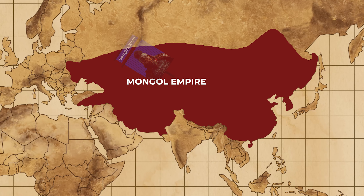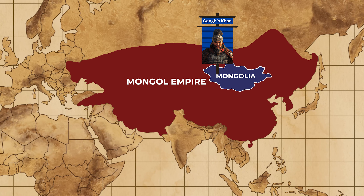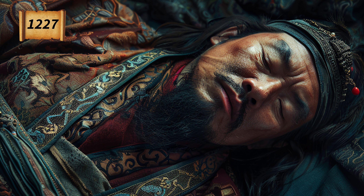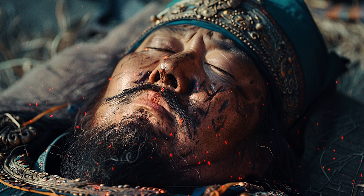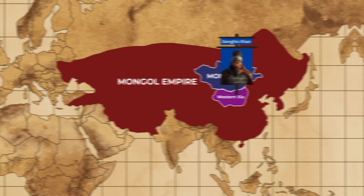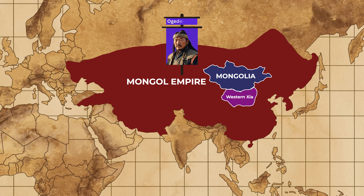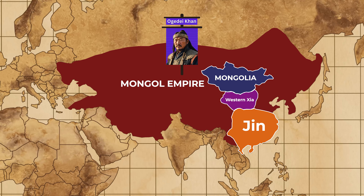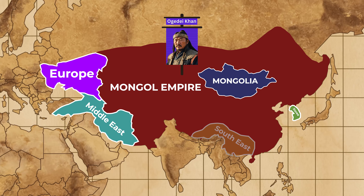By the early 1220s, Genghis Khan had established a vast empire stretching from the Pacific Ocean to the Caspian Sea. He returned to Mongolia in 1225 to consolidate his power and plan future conquests. However, his plans were cut short when he died in 1227 during a campaign against the Western Xia. The exact cause of his death remains a mystery, with various accounts suggesting injury from a fall or illness. His successors, particularly his son Ogedei, continued to push the boundaries of the empire — conquering the rest of the Jin dynasty in 1234, invading Korea, and launching further campaigns into Europe, the Middle East, and Southeast Asia.